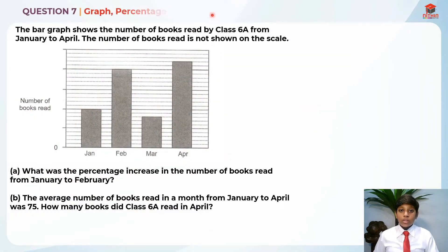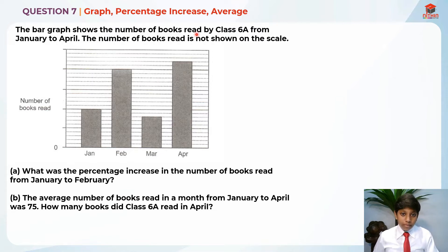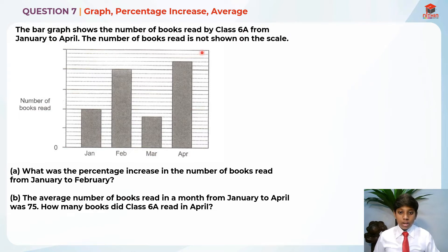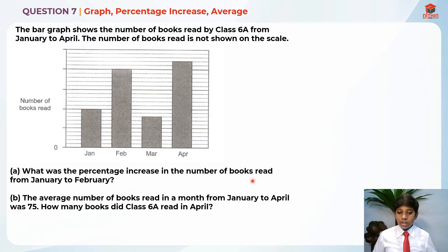Question 7 is testing us on graph, percentage increase, and average. Let's read the question for Part A first. The bar graph shows the number of books read by class 6A from January to April. The number of books read is not shown on the scale. For Part A: what was the percentage increase in the number of books read from January to February?